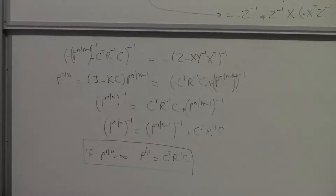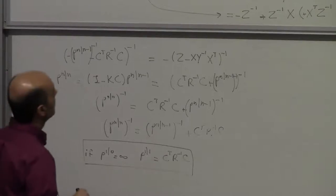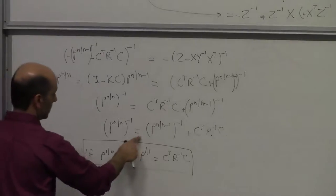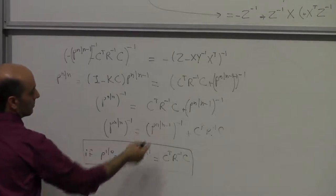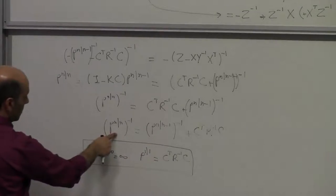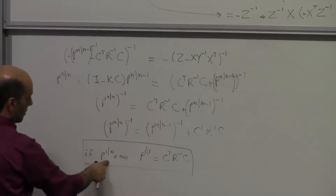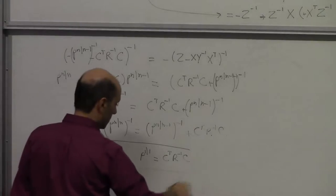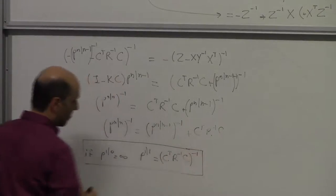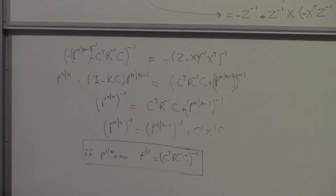A student asks: what happened to the inverse of P(1|1) going from one line to the next? The instructor confirms: on the left side we have P(N|N) inverse, so on the bottom it should be P(1|1) inverse — the inverse was missing. The instructor thanks the student: that would have come back to haunt me later.